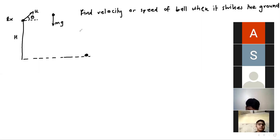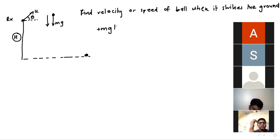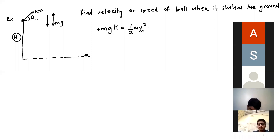Now we need to find displacement on the inclined surface. The displacement in the y-direction is h, and Mg acts downward while displacement is upward. Applying the work-energy theorem: Mgh = ½mv² – ½mu². Rearranging: v² – u² = 2gh. So v² = u² + 2gh, and therefore v = √(u² + 2gh).